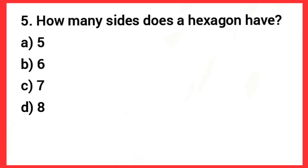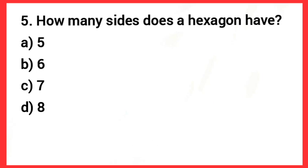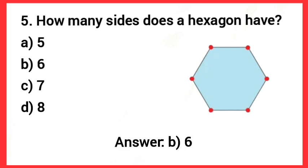Next, how many sides does a hexagon have? Answer: Option B, 6 sides.